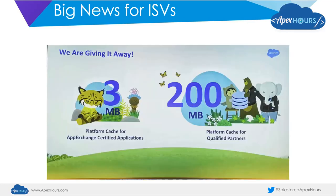There's also big news for ISVs. Most ISV applications keep their configuration in custom objects, and platform cache could make this much faster. Platform cache used to be a costly feature when introduced. But since Dreamforce 2019, AppExchange-certified apps — those that have passed security review — get a partition of three megabytes allocated to their application. Qualified partners even get 200 megabytes for free for their AppExchange products, which is an enormous advantage since previously they had to pay for it.